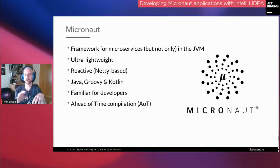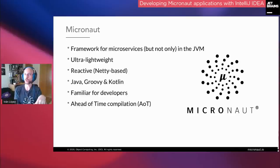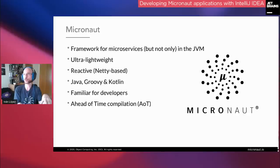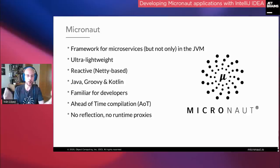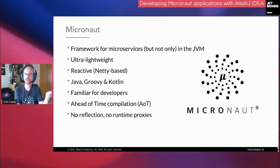What Micronaut does instead is: when you compile your Micronaut application, the framework generates classes that have all the information it needs. So when you start your application, the framework doesn't need to do anything at runtime — all the meta-information is already generated. There are classes to represent that, so we don't need to cache anything into memory. In Micronaut there is no reflection, no runtime proxies, no dynamic class loading, no dynamic bytecode generation — nothing like that, because we precompute everything ahead of time.